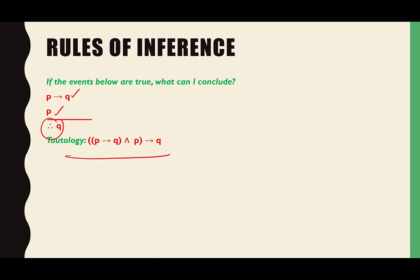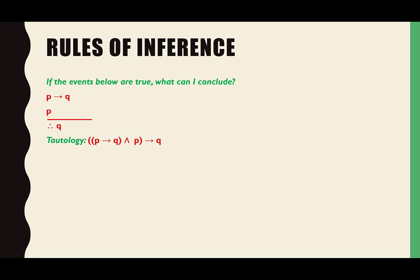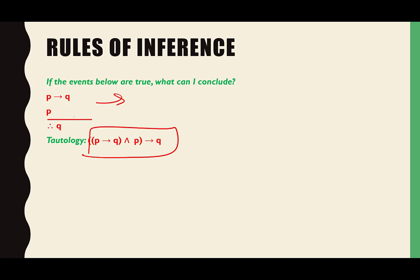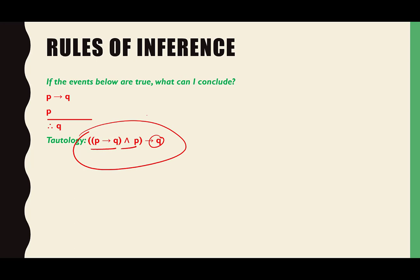This is a tautology, which we talked about earlier. This tautology is claiming that these two things — P and P therefore Q — together imply Q. This and this imply this will always be true. If you plug this into a truth table it will always be true, regardless of what P and Q's values are. If it's always true no matter what, that is called a tautology.